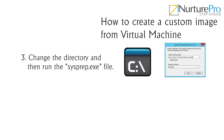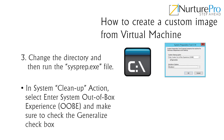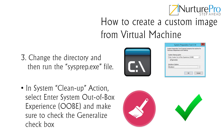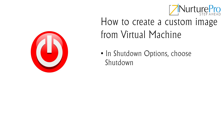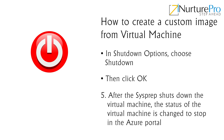The system preparation tool dialog box will pop up. Then do the following: in system cleanup action, select enter system out of box experience and make sure to check the generalized checkbox. In shutdown options, choose shutdown. Then click OK.